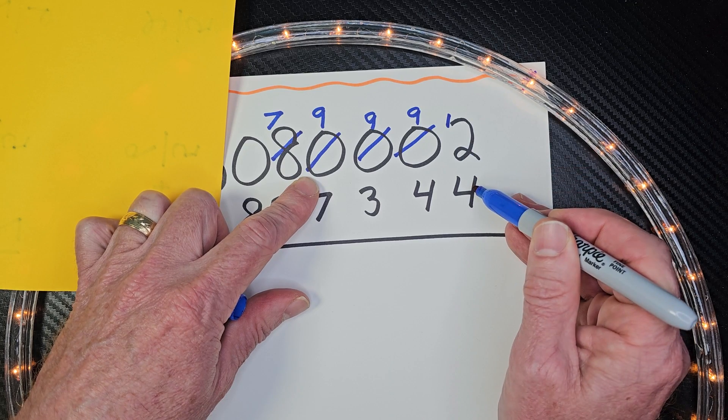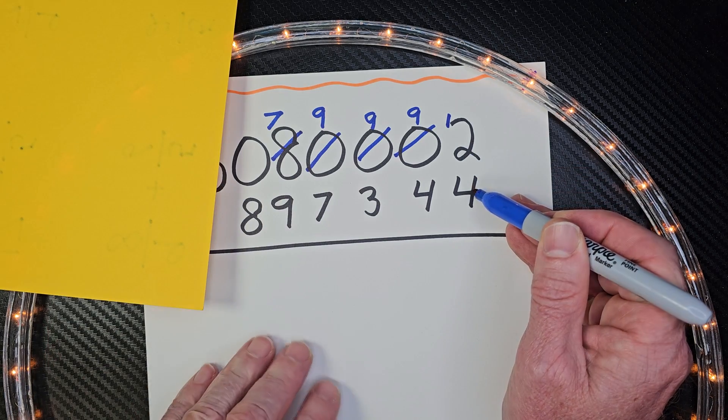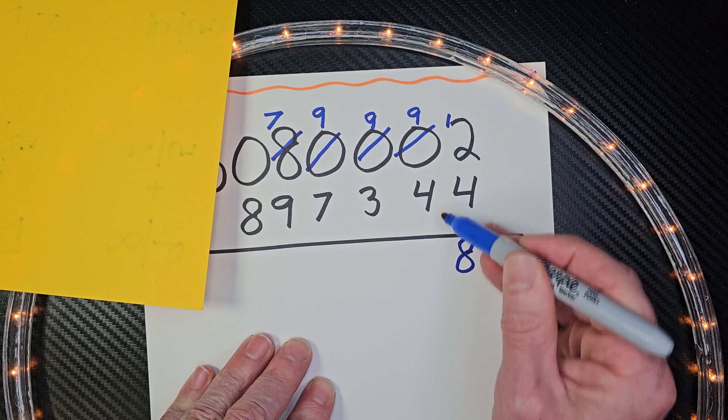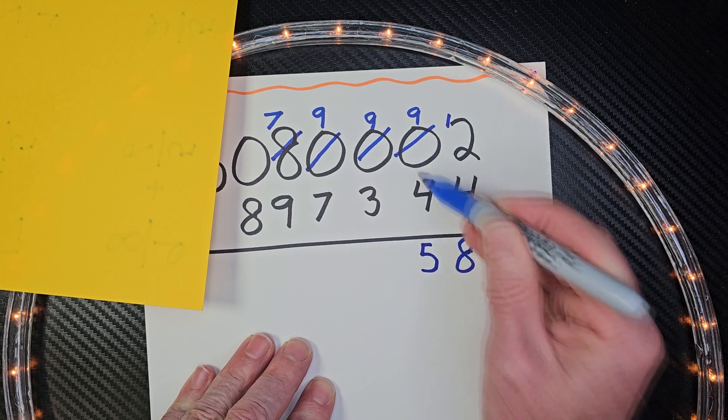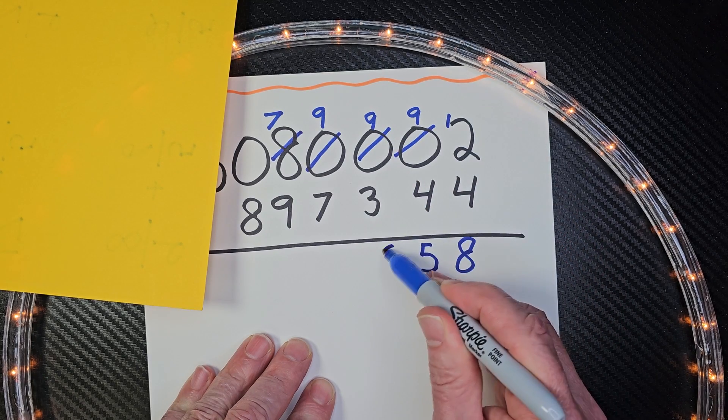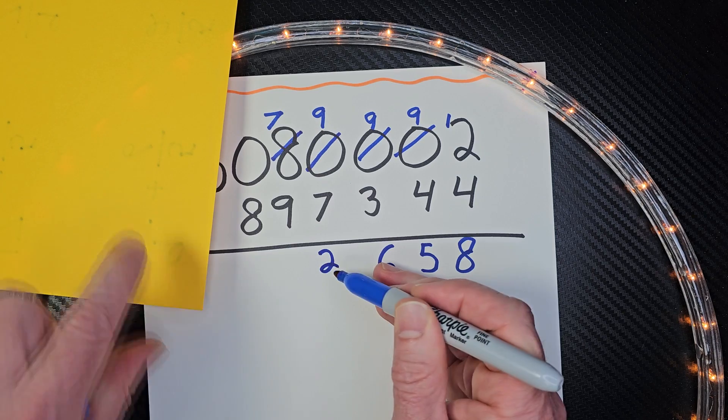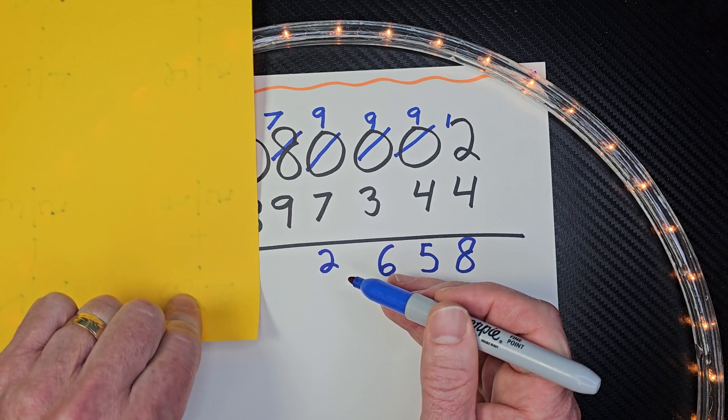So 12 minus 4 would be 8. So that would be 8 right here. 9 minus 4, 5. 9 minus 3, 6. 9 minus 7, 2. And if you need to, you can always just put the paper over there so you don't get too overwhelmed.